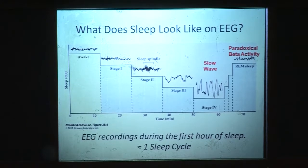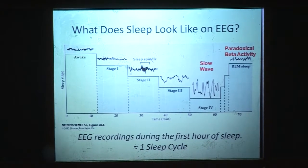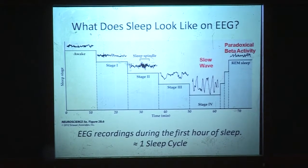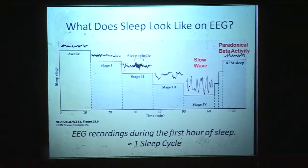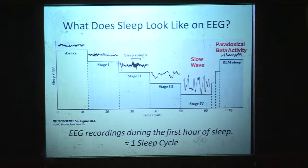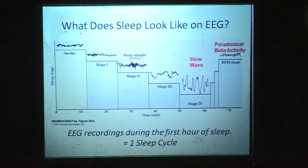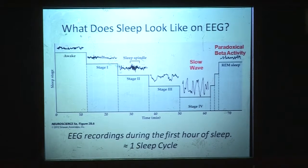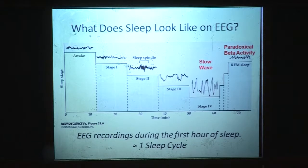What does sleep look like on an EEG — an electroencephalogram? In an awake person, you see high frequency waves with small amplitude. In stage one of sleep, we move to a slightly slower waveform. By stage two, you see sleep spindles, which are very important — we think they're related to consolidation and how the hippocampus is working. That's the important part of sleep where you turn your short-term memories into long-term memories. And even if you take a nap, you get stage one and two sleep, so naps are good.